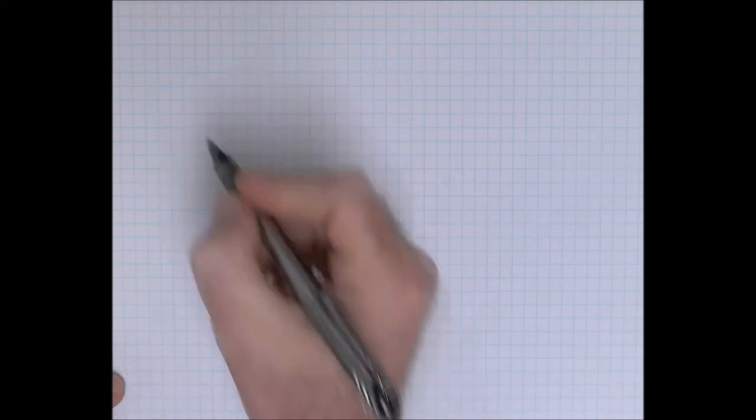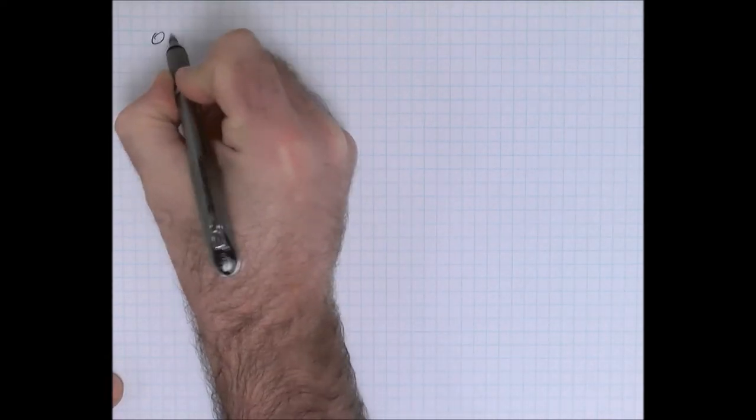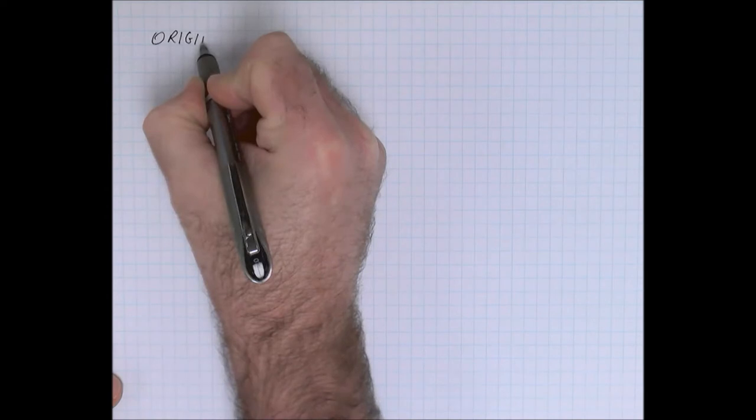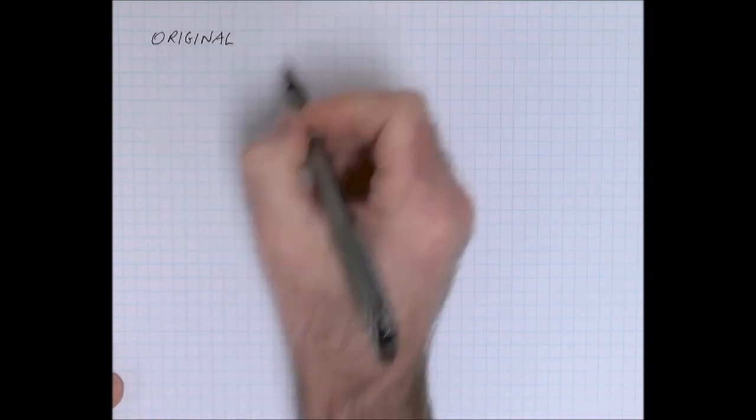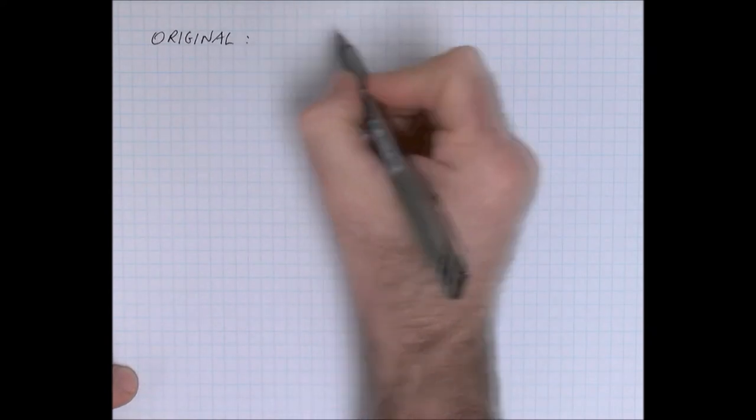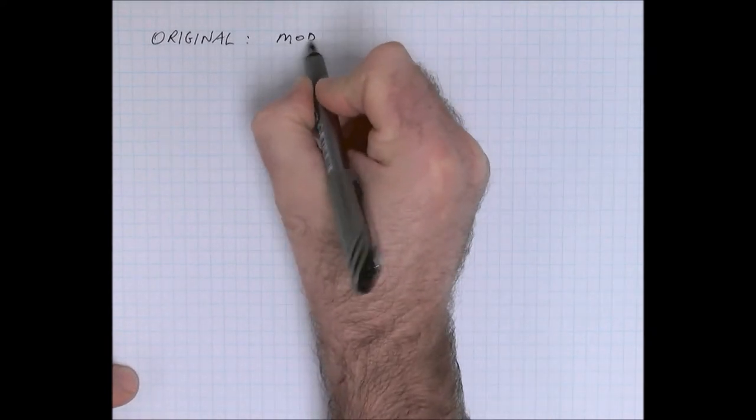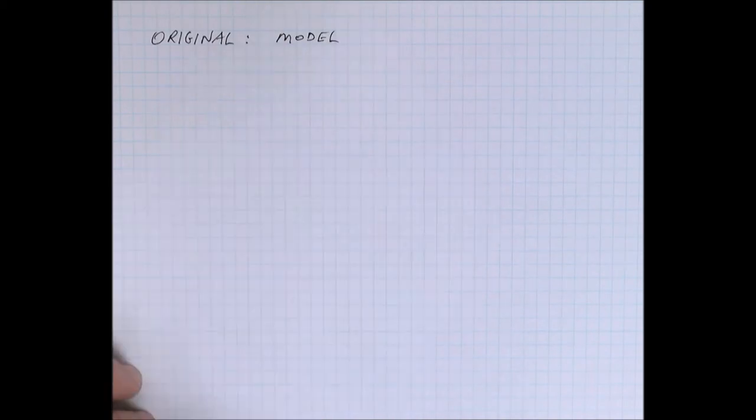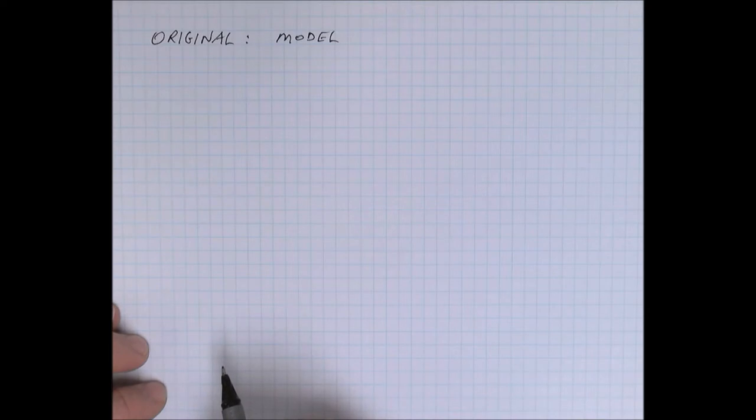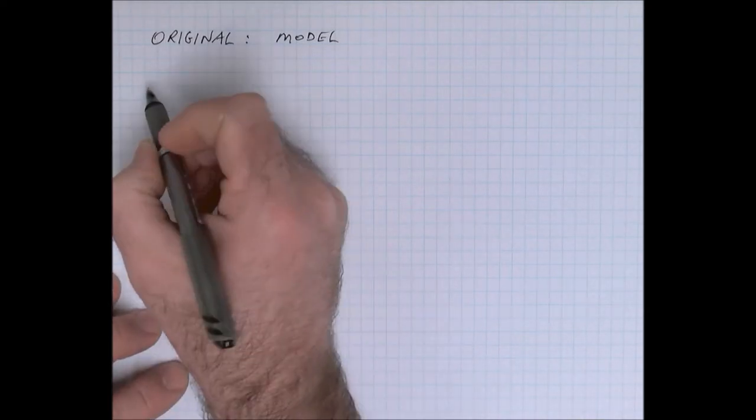This model—so she wants to construct the model. Really what we're dealing with is the ratio of the original compared to the model that she's constructing. So this is a scale model, and the width at the base compared to the height of the actual CN Tower